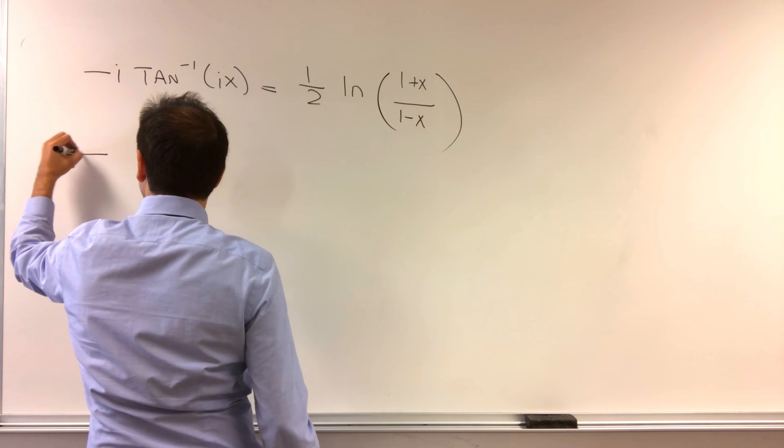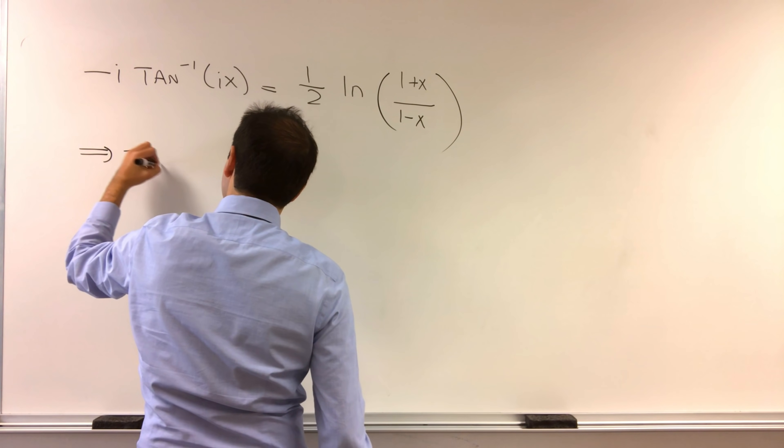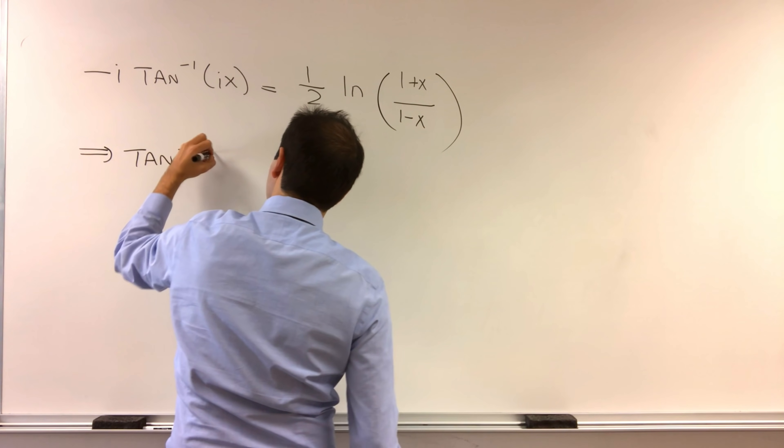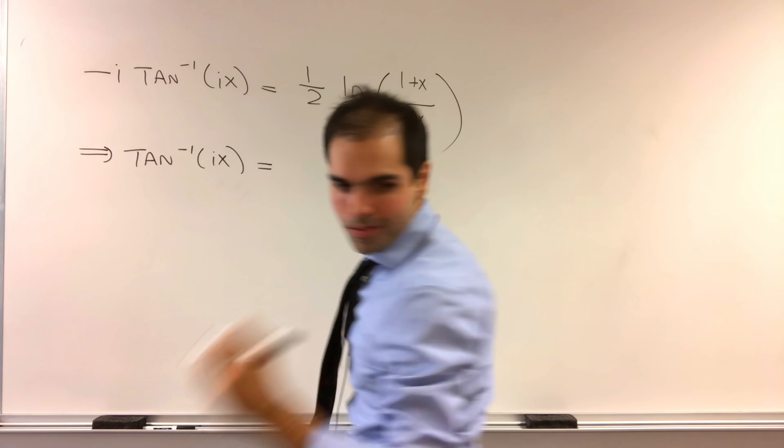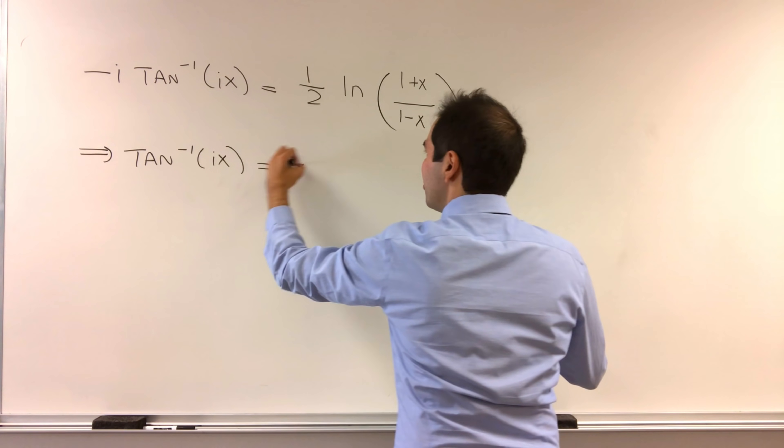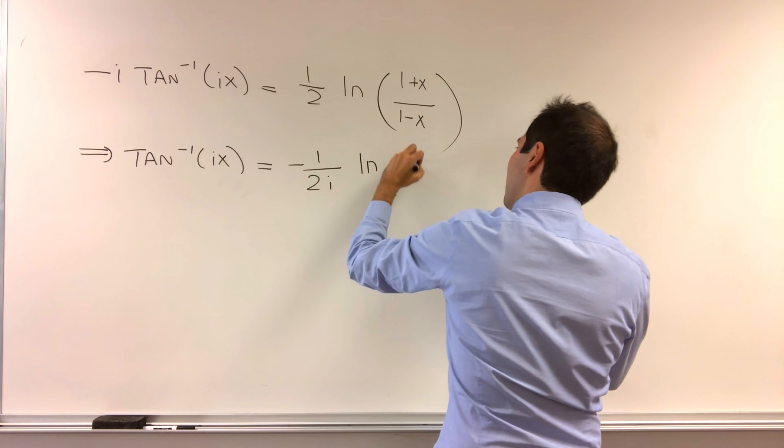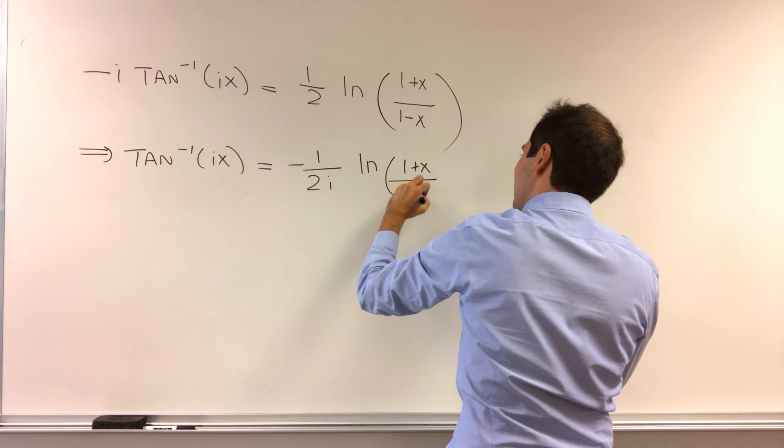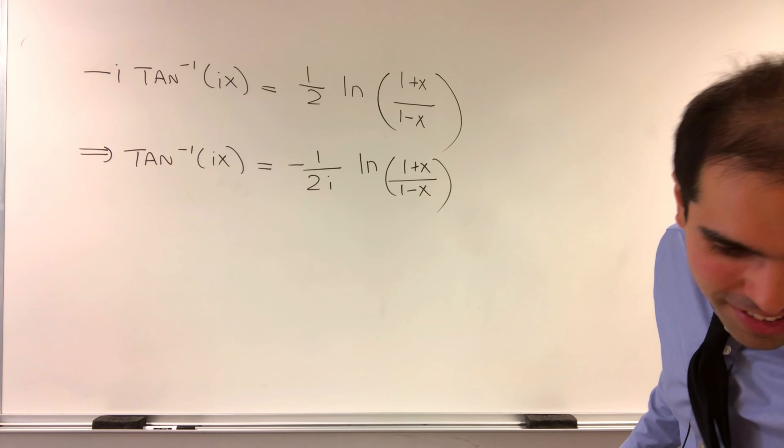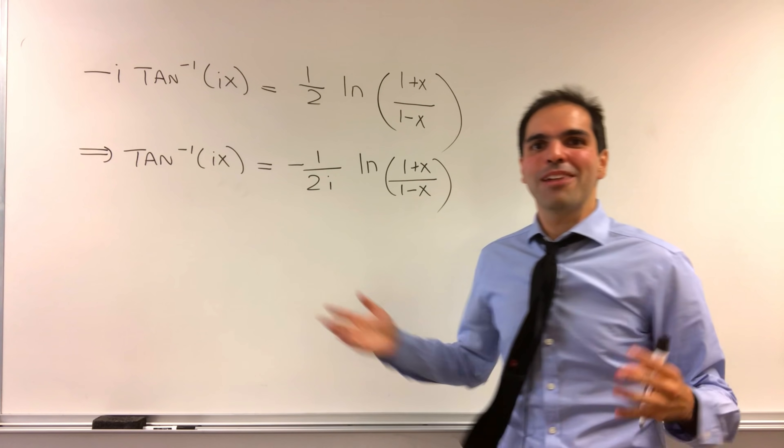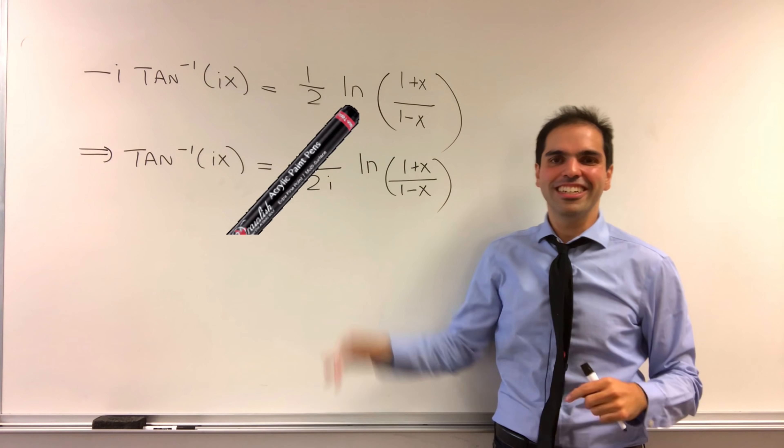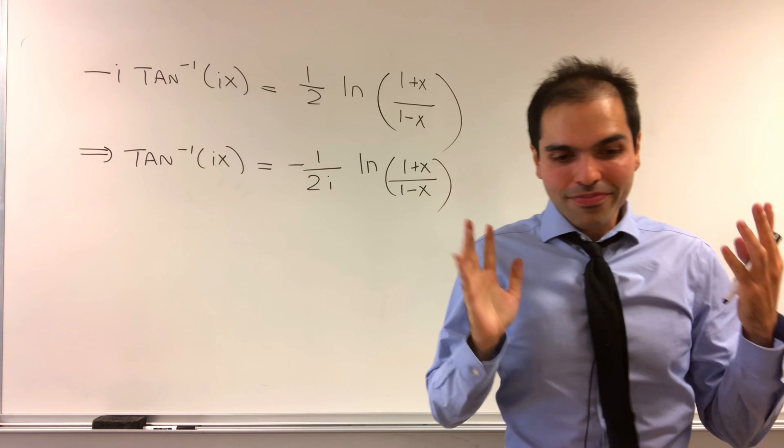So in other words, the stuff that we had, arctangent of ix, and again, more i's on the bottom, this gives you minus 1 over 2i ln of 1 plus x over 1 minus x. I hope black pen, red pen won't be mad, but here it's useful.